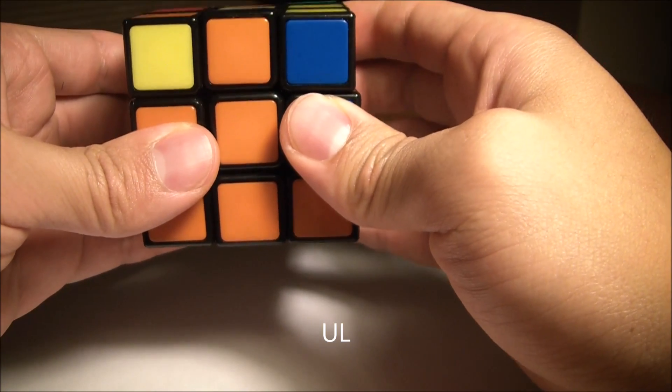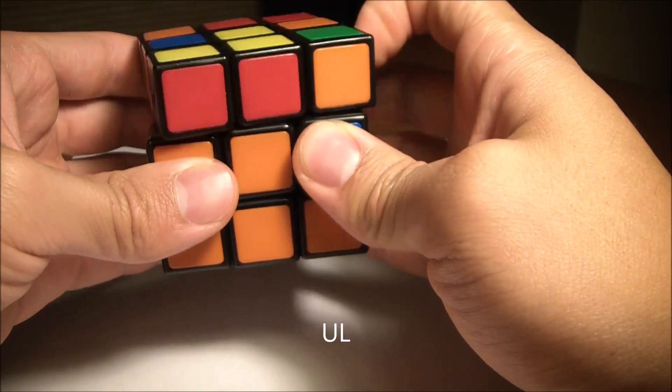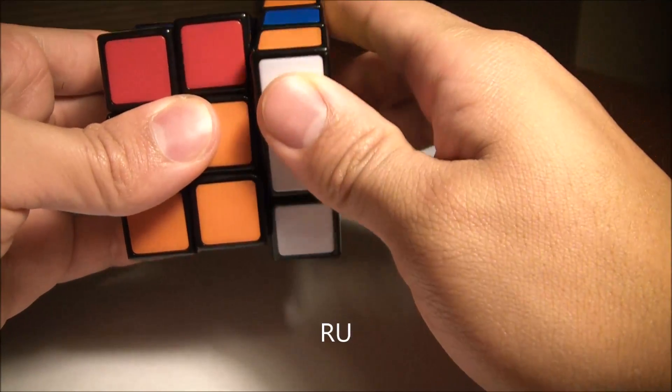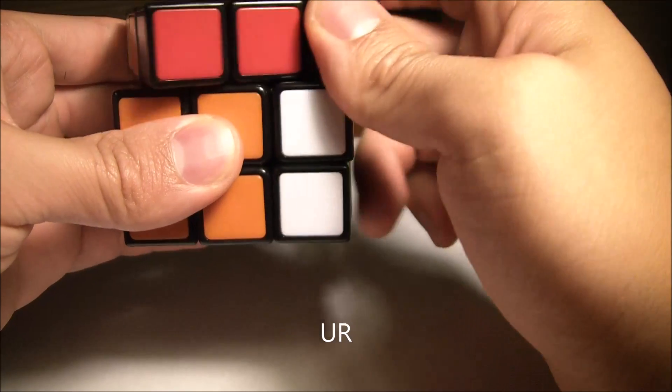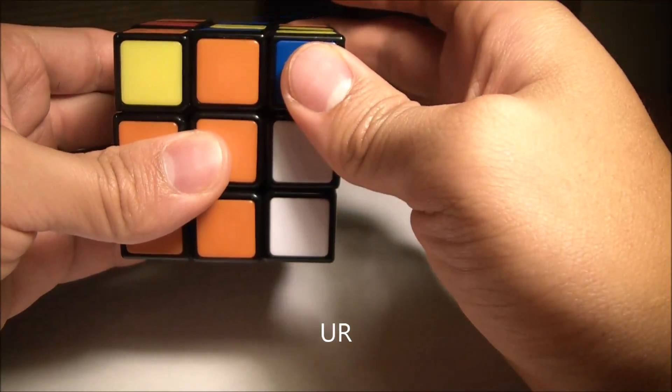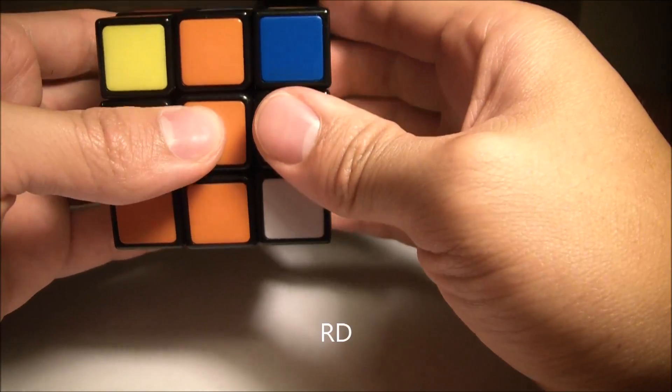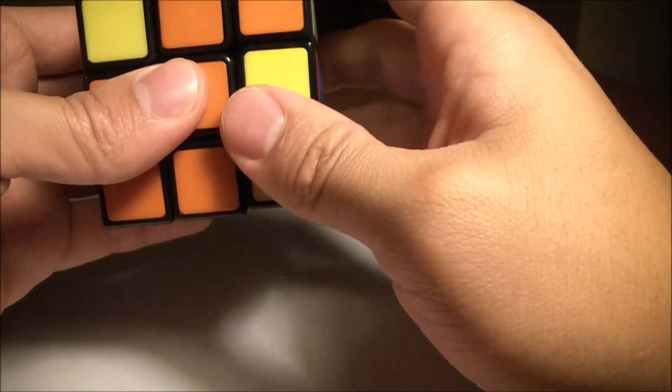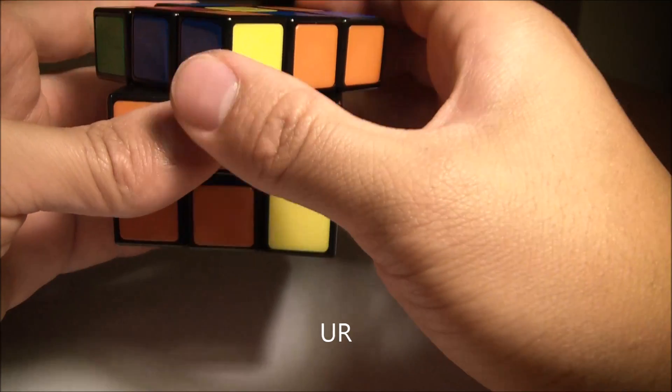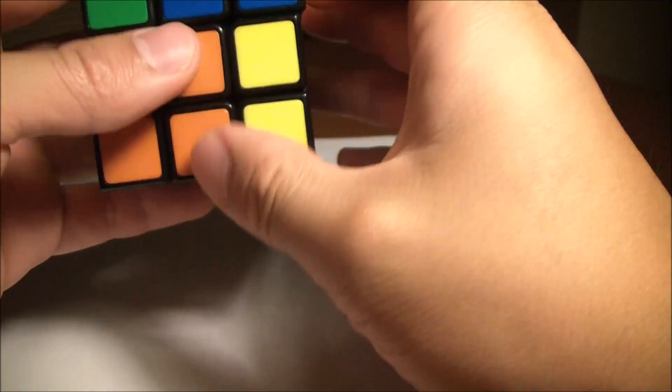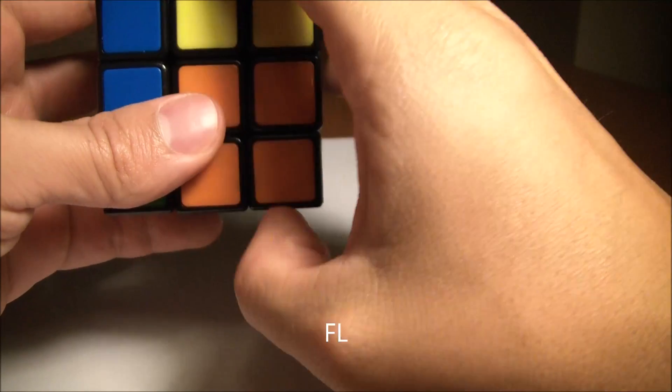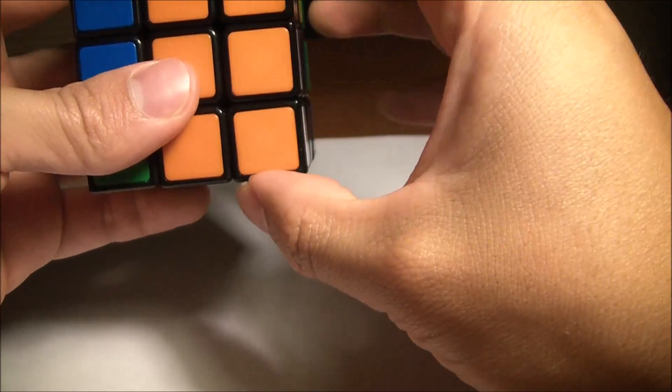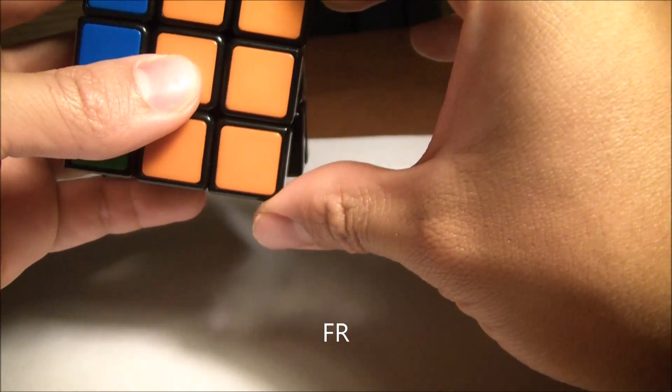You take an up face left turn, a right face up turn, an up face right turn, a right face down turn, an up face right turn, a front face left turn, an up face left turn, and then you move it on down with the front face right turn.